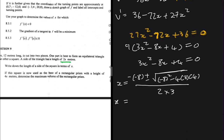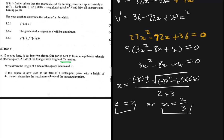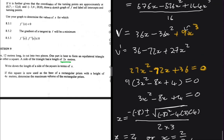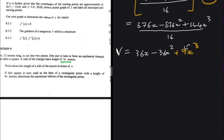Evaluating with a calculator gives x = 2 or x = 2/3. One of these values corresponds to a maximum and the other to a minimum. We are looking for the maximum, so we substitute both x = 2 and x = 2/3 into the volume equation to see which gives the larger value.